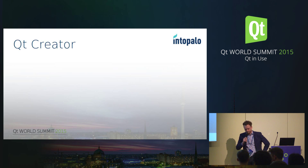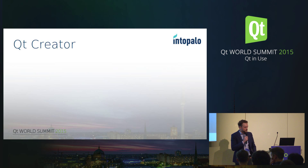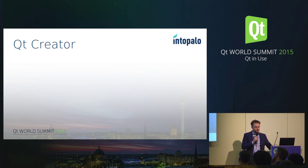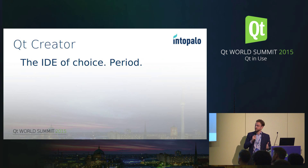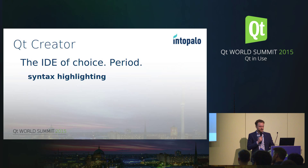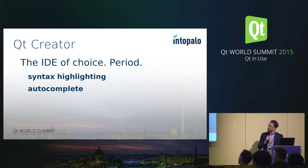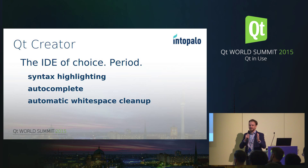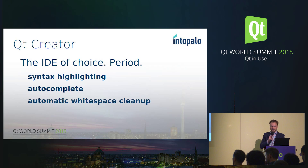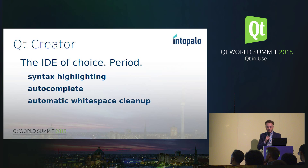That brings me to Creator. Creator is definitely the place to be if you're writing QML and JavaScript. It's the IDE of choice for Qt developers — to me, it's just plain the IDE of choice. I have a lot of reasons. Syntax highlighting — only Qt Creator does it right. Autocomplete — it makes me a lazy developer, but that's a lot fewer typos. Automatic white space cleanup — the sanity bot will not yell at me because I've saved my file inside Creator.